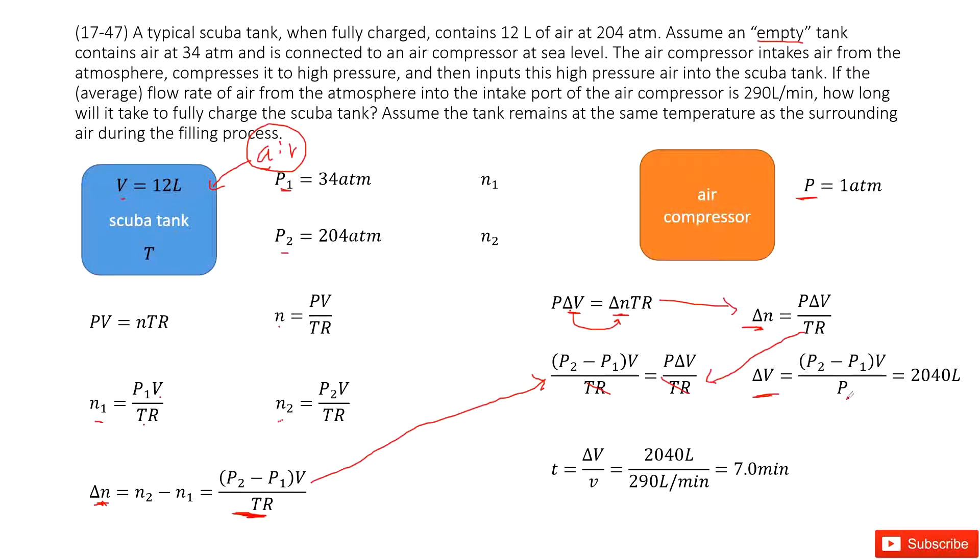In this case, we input the known quantities P1, P2, P, and V. So P1, P2, P, and V. We get the volume change for the air is 2.040L. So that means the air compressor needs to input 2.040L air inside this tank to satisfy all the requirements. Now we look at this compressor. In one minute, it can input 2.090L. So how much time is needed? So we use the total volume, delta V divided by speed, we get 7 minutes. Thank you.